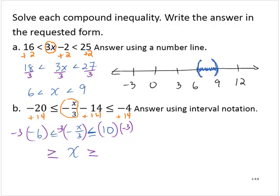Let's see, negative 3 times negative 6 is 18. And 10 times negative 3 is negative 30. And so I have 18 is greater than or equal to x is greater than or equal to negative 30.